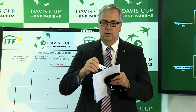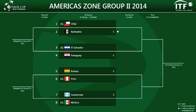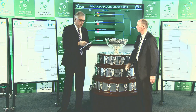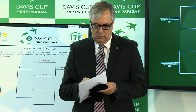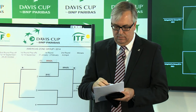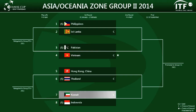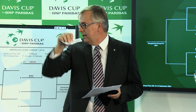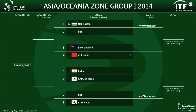We will have Barbados. We will then move on to Asia Oceania Group Two — this is Kuwait. That completes the group. Asia Oceania Group One: Chinese Taipei. That's going to be held in India. That completes Asia Oceania Group One.